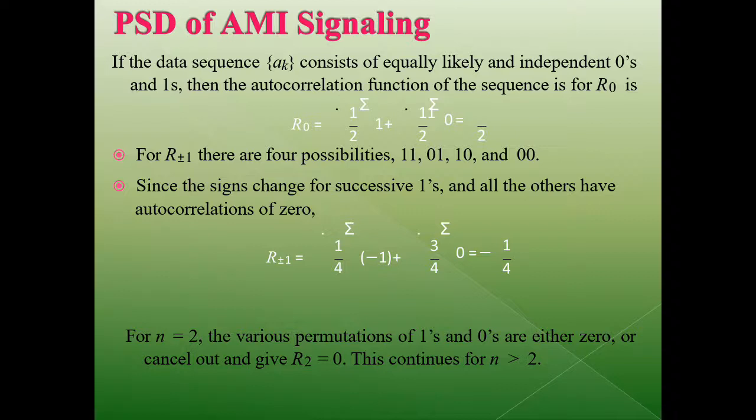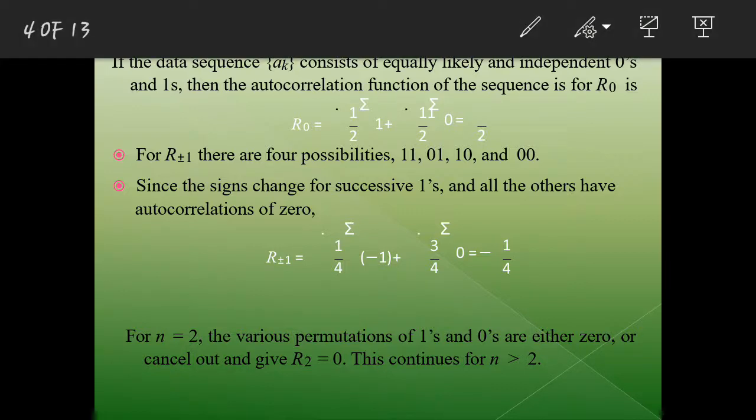How to calculate the power spectral density of this bipolar or AMI signaling? First we need to calculate the lower order term 0 and 1. So we will assume only two bits 0 and 1. Probability of chances occurring is half. Probability of chances occurring is half. Half bit for 1, half bit for 0. Now we will go for the higher order terms.